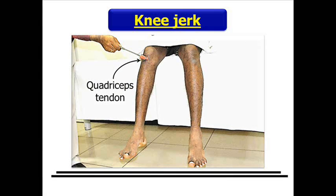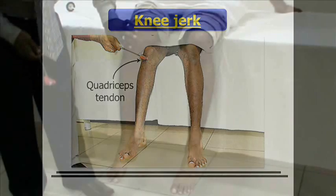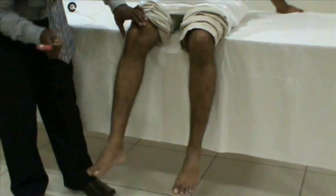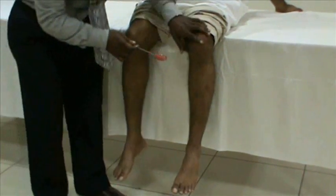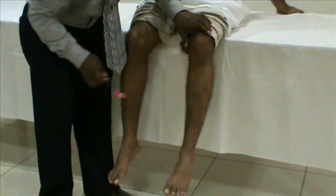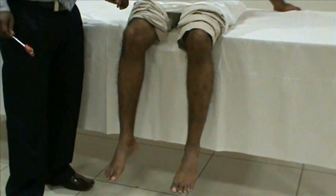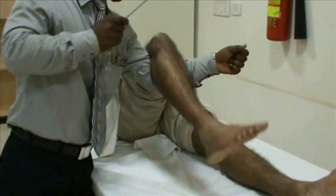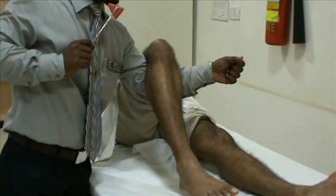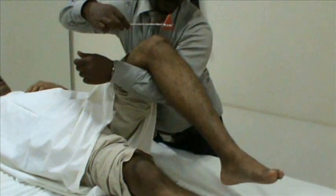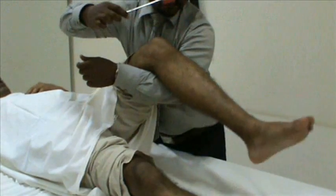Seat the subject such that his legs dangle freely over the edge of the table. Expose the lower half of the thigh to appreciate contractions of quadriceps. Tap the patella tendon briskly below the patella and note the contraction of the quadriceps with extension of the knee.